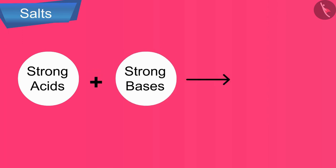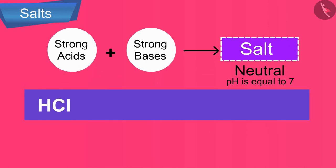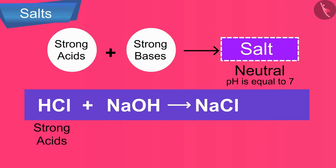Firstly, the salts of strong acids and strong bases give neutral salt with pH equal to 7. For example, sodium chloride is formed from a strong acid, hydrochloric acid, and a strong base, sodium hydroxide, so they produce a neutral salt.